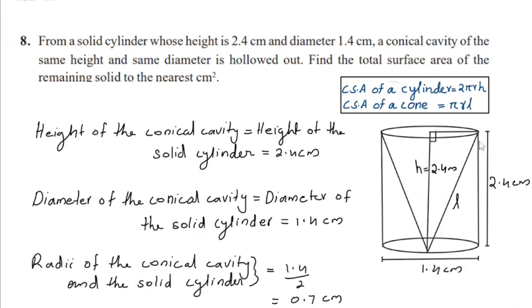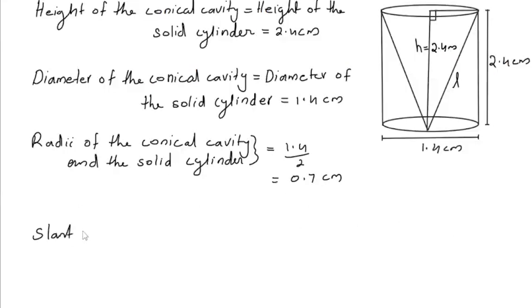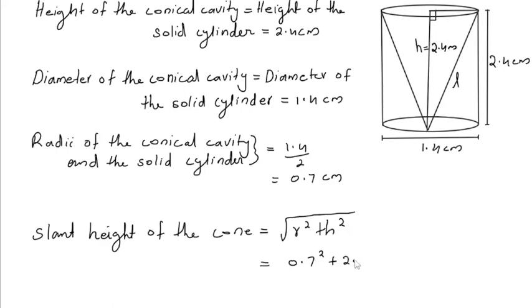Here we have to find the slant height of this conical cavity, which is equal to square root of r square plus h square. Radius is 0.7 and the height is 2.4. So 0.7 square plus 2.4 square under the root.